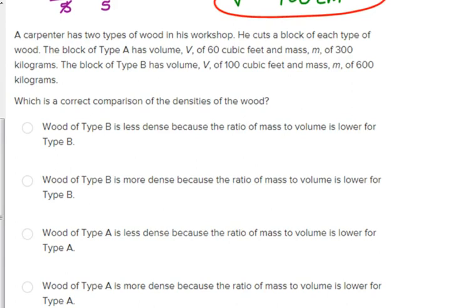Let's look at the last problem I've got there. Carpenter has two types of wood in his workshop. He cuts a block of each type of wood. The block of type A has a volume of 60 cubic feet and a mass of 300 kilograms. Block B has a volume of 100 cubic feet and a mass of 600 kilograms. Before I go any further, based on the last problem I just did, I'm going to make sure that all my units agree. I've got cubic feet for both pieces of wood and I've got kilograms for both pieces of wood. So, I'm good. So, which is a correct comparison of the densities of the wood? So, we need to calculate the density for both types of wood. So, A, density equals mass 300 divided by volume 60. Be careful. They list the volume first. Be careful that you don't list that first in your equation. It's always mass divided by volume regardless of which one they give you first.